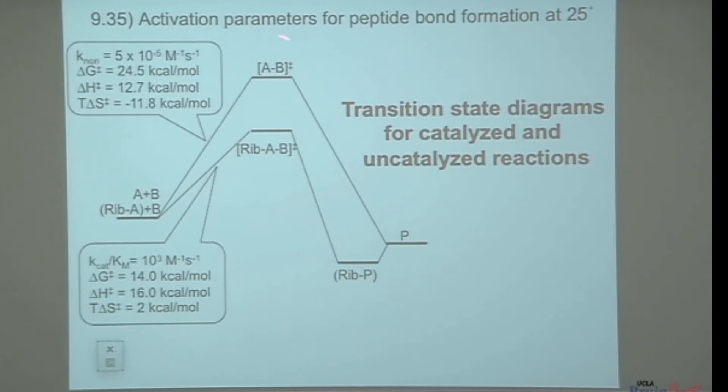These are the transition states, right? And so from here to here are the thermodynamic parameters from going from the ground state to the transition state for the ribosome catalyzed reaction, and here are the thermodynamic parameters for going from the ground state to the transition state in the uncatalyzed reaction.